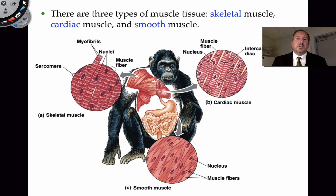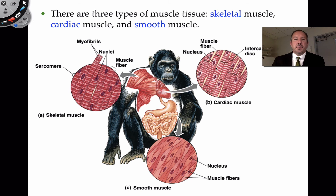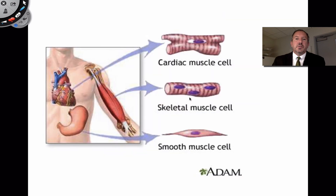The third type of muscle is called cardiac muscle, found exclusively in the heart. Cardiac muscle also has some striations, so it might under the microscope be confused with skeletal muscle, but an expert eye will tell the difference. There is only one nucleus per cell in cardiac muscle, and it is also involuntary — though all of it is controlled by the nervous system.